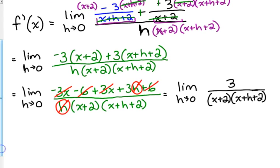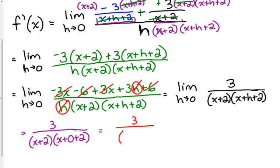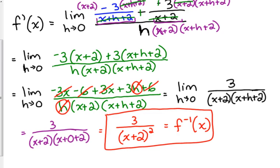So, I'm going to no longer have an issue with plugging in 0 for h. So, I'm going to do that. Well, then that means I have x plus 2 times x plus 2. So, I'm just going to write that as x plus 2 squared. And, that is the derivative of negative 3 over x plus 2. Its derivative is positive 3 over x plus 2 squared.